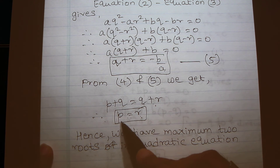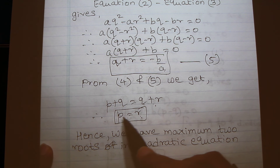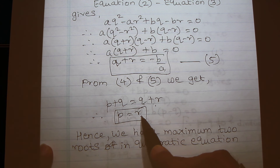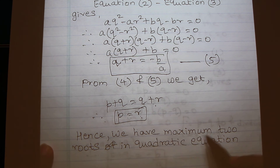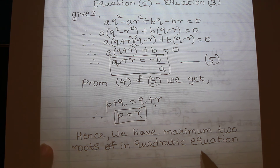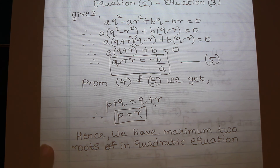This means our assumption that there are three distinct roots is wrong, because p and r are equal. Hence we can say that there are maximum two roots in a quadratic equation. Hope this helps you to understand quadratic equations. Thanks a lot.